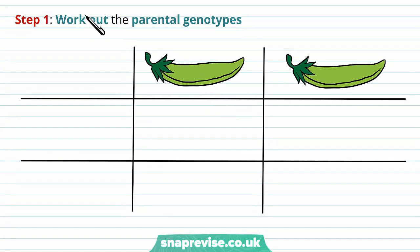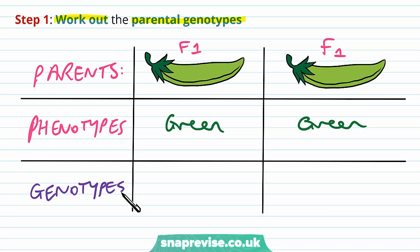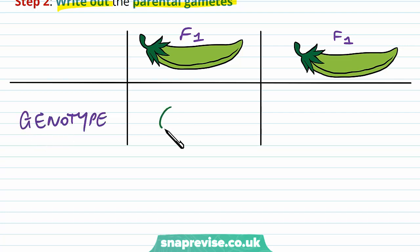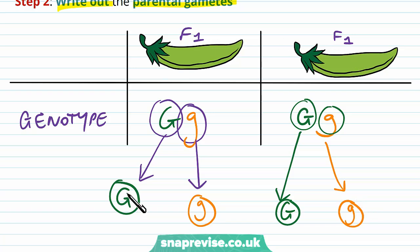We use a Punnett square again to work out the genotypes and phenotypes of the F2 generation. First, work out the parental genotypes: we've got an F1 green pea pod and an F1 green pea pod, and both phenotypes are green. From our previous square, we know all of them are heterozygous — large G, little g — and so both parents share that genotype. Now we should realise that we can actually have two possible gametes for each one: a gamete with capital G, or a gamete with little g.